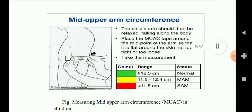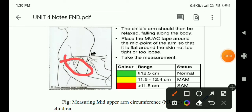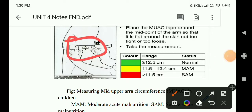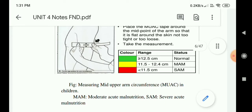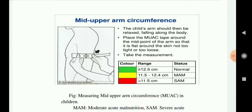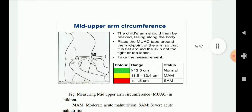The mid-upper arm circumference (MUAC) is measured using a special tape. This helps us determine the nutritional status of the child — whether normal, moderate, or acute malnutrition. The child's arm should be relaxed and falling along the body. Place the MUAC tape around the mid-upper arm so that it lies flat against the skin — not too tight and not too loose.